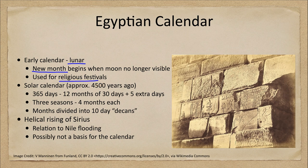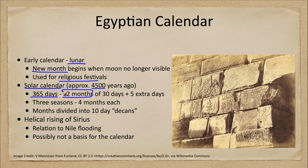However, they did develop a solar calendar about 4,500 years ago, which had 365 days — the same length as our year today. This was divided into 12 months of 30 days each. If you multiply 12 times 30, you get 360, so you didn't quite fit all of the days.